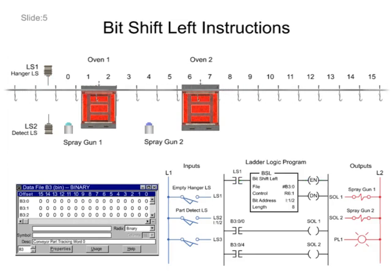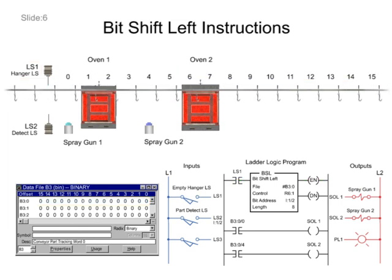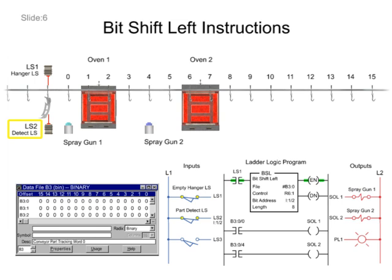As hooks are detected by LS1 limit switch, bits are shifted in file B30 from left to right. When parts are detected by the LS2 limit switch, Logic1 is loaded into the first bit of the shift register.